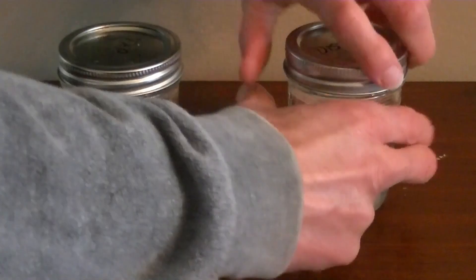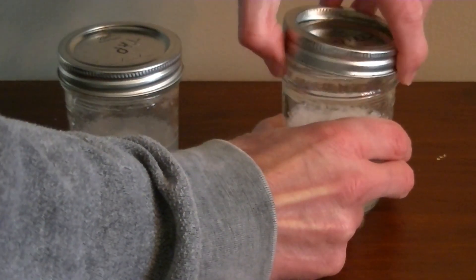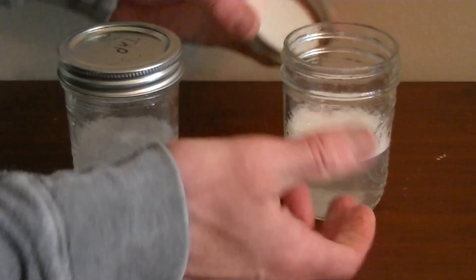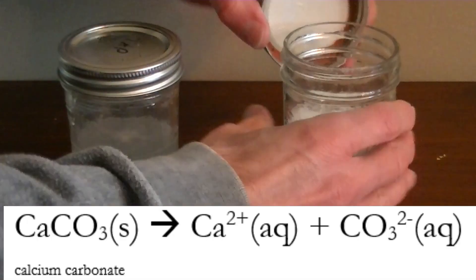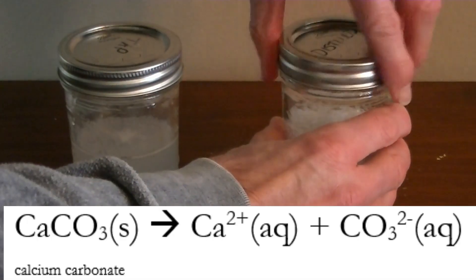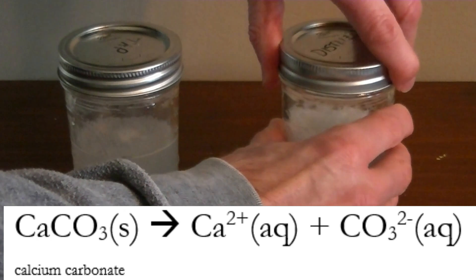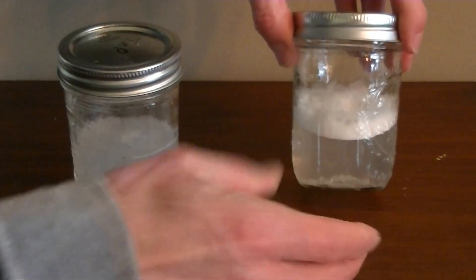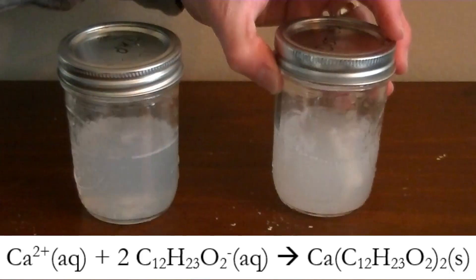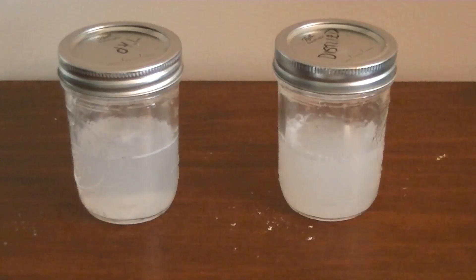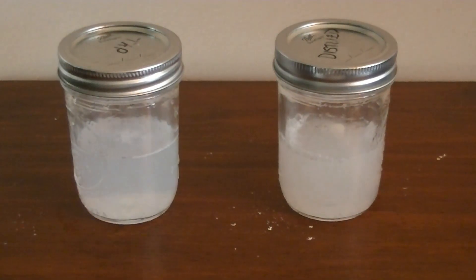When sodium laurate dissolves in distilled water, it's free to cause suds. However, when a piece of chalk is added, a little bit of the calcium carbonate that makes up the chalk dissolves into the distilled water. The dissolved calcium reacts with the laurate ion to form calcium laurate solid. Thus, the addition of chalk to the sudsy distilled water causes the water to turn a milky color and the suds to almost disappear.